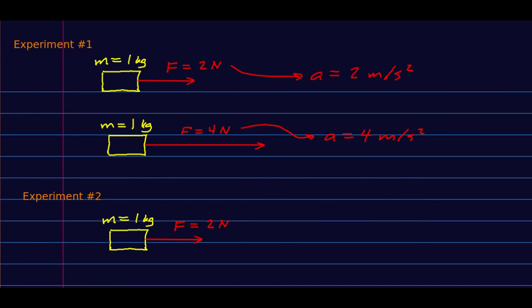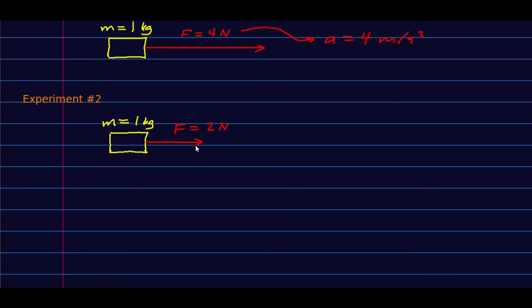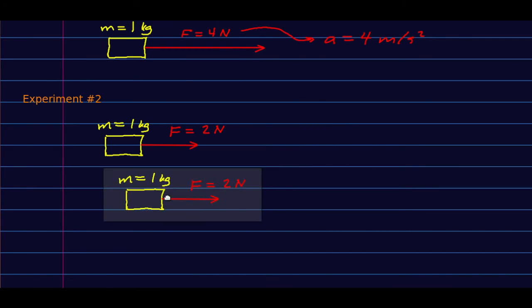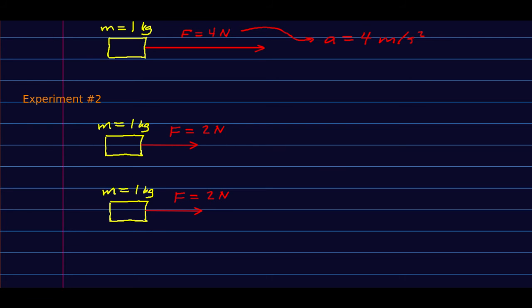So now you can do a very similar experiment. You take your mass of 1 kilogram and you exert a 2 newton force again on it, being careful that that's the only force that matters. And now, instead of changing the force, you change the mass. So you replace your 1 kilogram object with a 2 kilogram object. And what you now find is, well, the acceleration of this one we already know, it's 2 meters per second squared. When you double the mass, the acceleration is chopped in half. So more mass of objects subject to the same force accelerate more slowly.